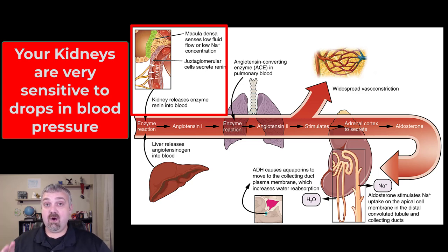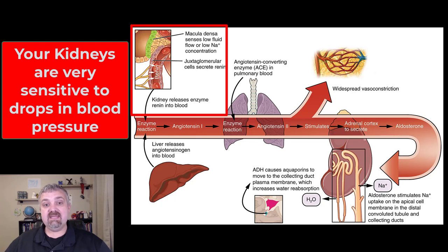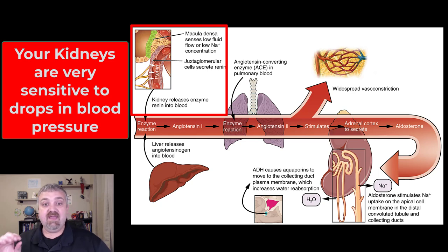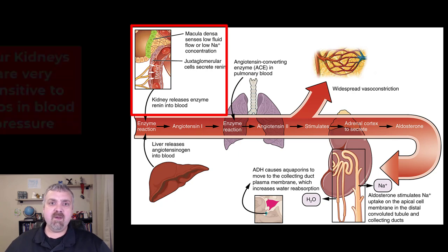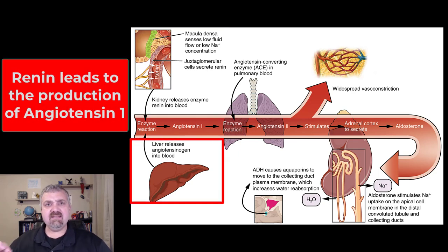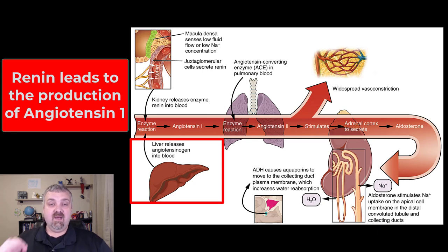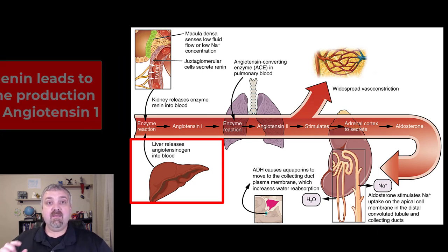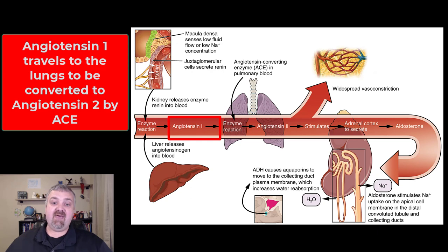The kidneys are more sensitive to changes in blood pressure than any other structure in your body. So if the macula densa cells sense that blood pressure is going down, the juxtaglomerular cells are going to secrete a compound called renin. Renin is dumped into the bloodstream, where it meets angiotensinogen — a protein produced by the liver. When angiotensinogen comes into contact with renin, it becomes angiotensin-1.